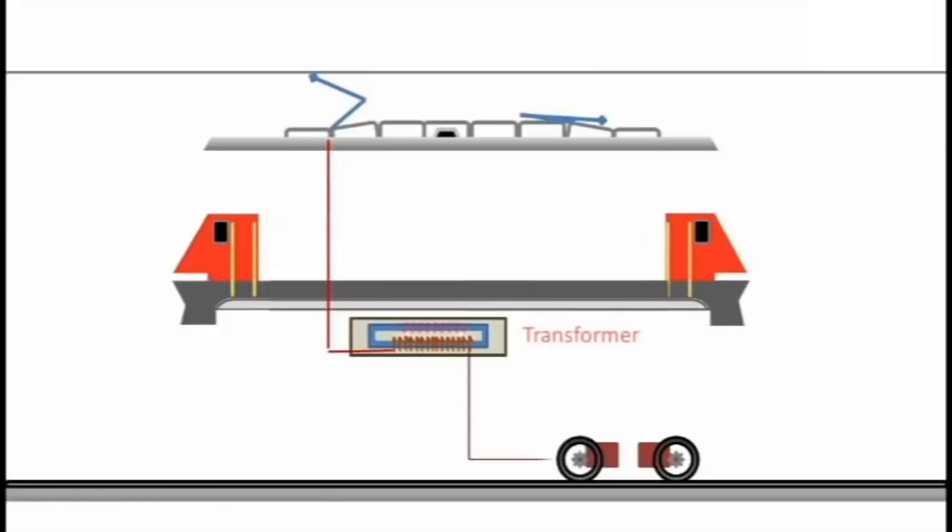A pantograph collects electricity from overhead wires and transfers it to a transformer which sets the electrical power to the desired voltage. A connection with the axle brushes completes the circuit.